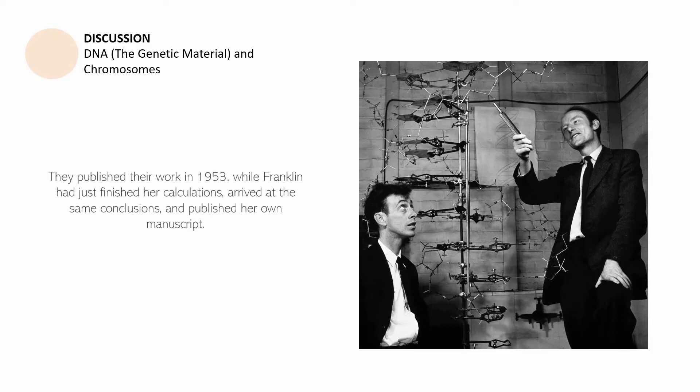This is the kind of structure that we still accept up until today. They published their work in 1953, Watson and Crick, while Franklin had just finished her calculations in the same year. She arrived at the same conclusions and she also found out that the correct model is what these two, Watson and Crick, have then published. She also published her own manuscript. But unlike these two, what she had were her calculations.